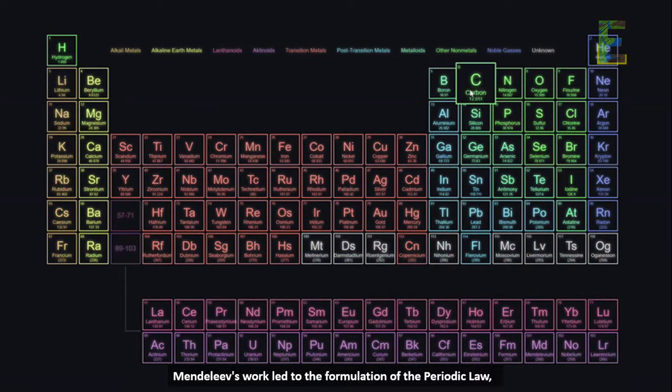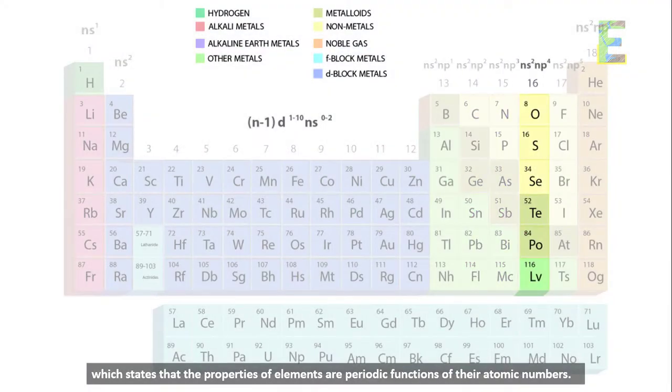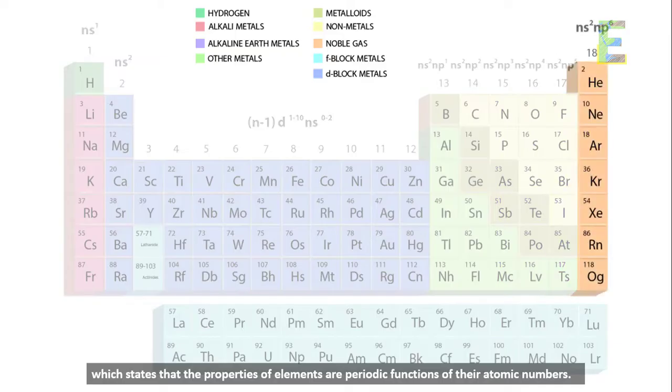The Periodic Law. Mendeleev's work led to the formulation of the Periodic Law, which states that the properties of elements are periodic functions of their atomic numbers.